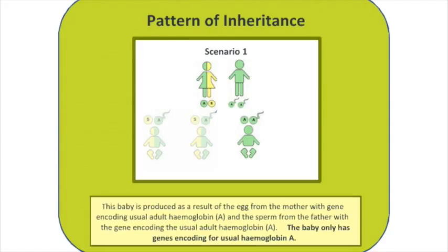What other combinations could we get? We could see the inheritance of the healthy haemoglobin A gene from the mother combining with one of the healthy genes from the father, so this baby will be of genotype AA and will have normal healthy haemoglobin. The same can happen again — the healthy haemoglobin A gene from the mother can combine with either of those genes from the father.